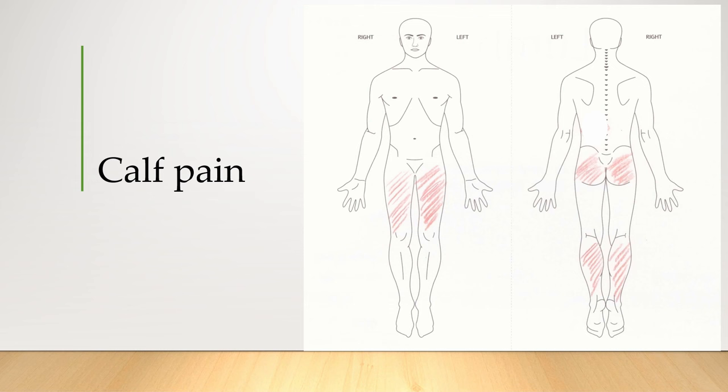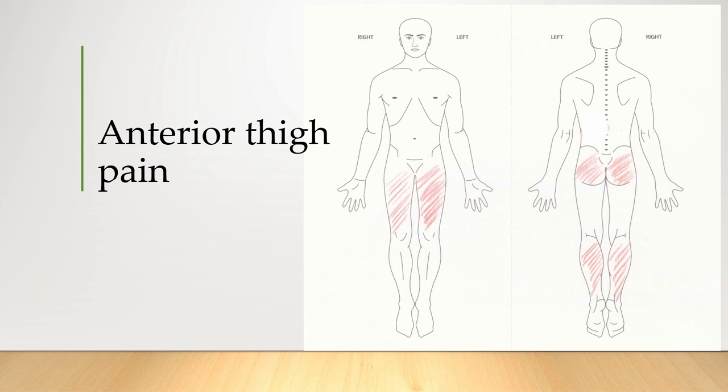Regarding anterior thigh pain, her discomfort may very well be exercise-related, owing to her recent involvement in aerobic dance. Notably, she reported a reduction in her symptoms when she took a break from aerobic dance classes for two weeks. Thus, we could consider excluding this from being lumbar origin pain. To exclude the anterior thigh pain from lumbar origin, I am particularly interested in looking for disc herniation at the L3-4 or L4-5 levels that could be compressing the L3 or L4 segmental nerve roots.